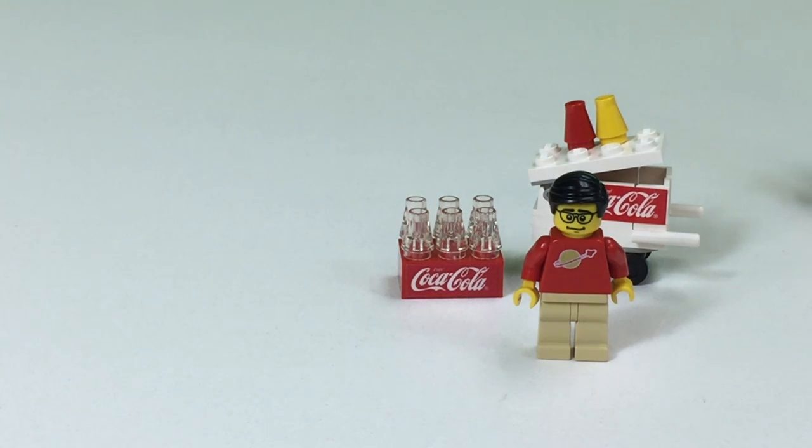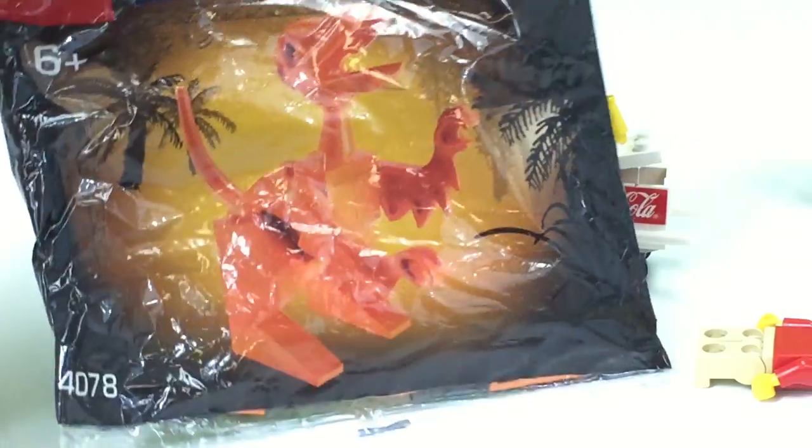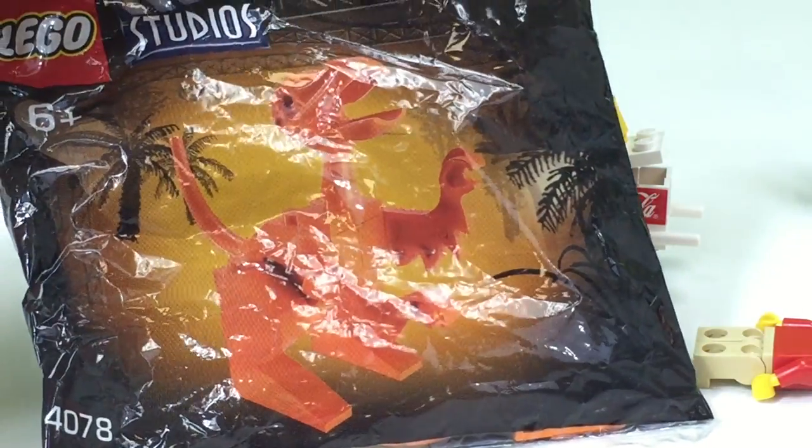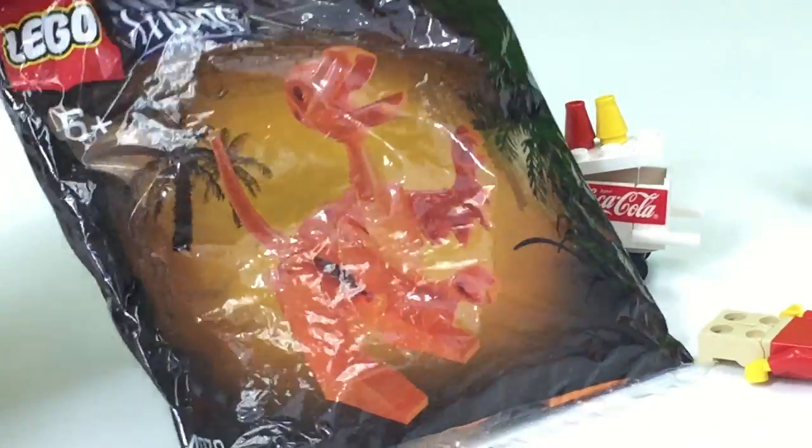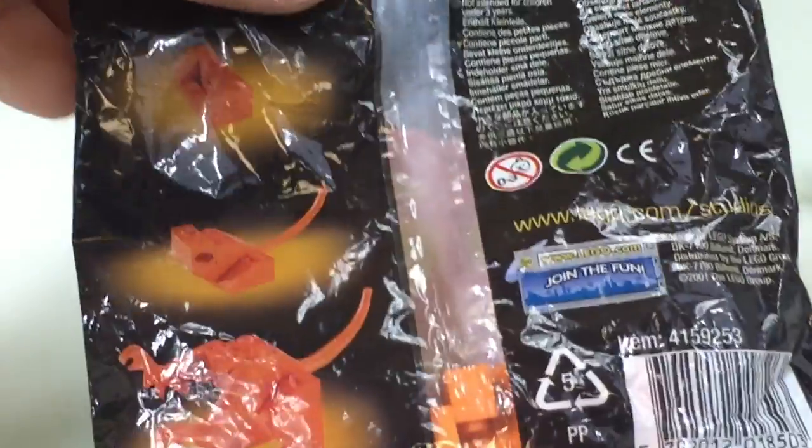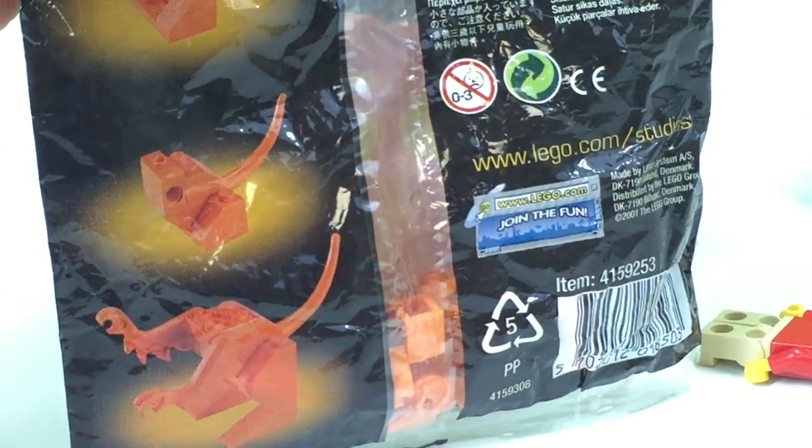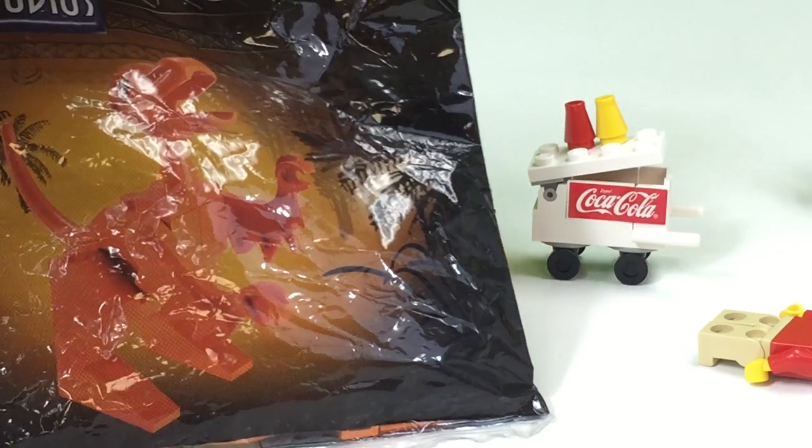So the next one is the Often Forgot About Tyrannosaur. Uh-oh. Tyrannosaur, set 4078. And it should have instructions on the back. It does! So we're going to open this thing up, and we're going to build it.